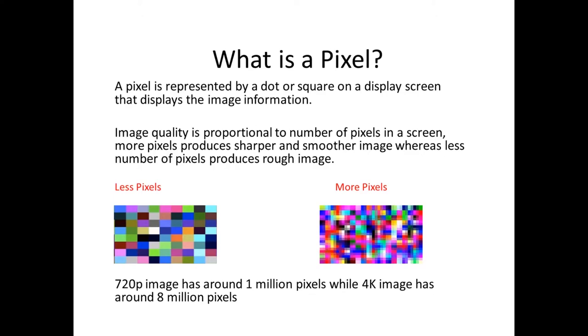So let's start by understanding some basic terms, like what is a pixel. A pixel is represented by a dot or square on a display screen that displays the image information. So every screen or display that you see, like a TV screen, a computer screen, or even a camera screen or a phone screen, constitutes of many dots or squares that display some color or some image information. That is known as pixel.